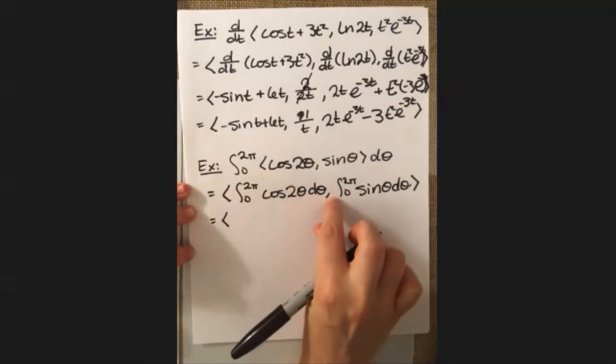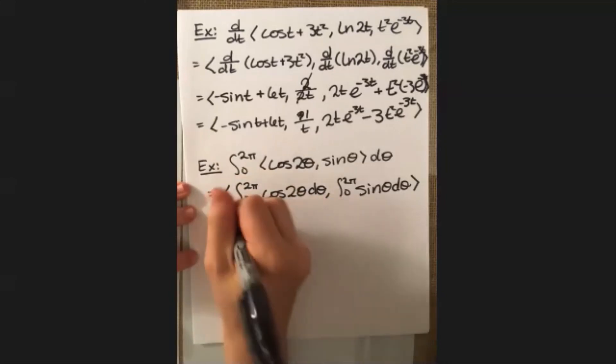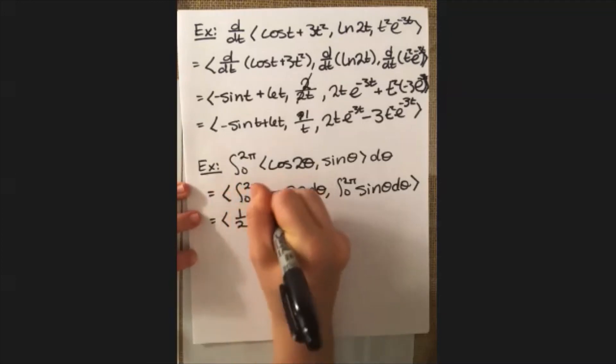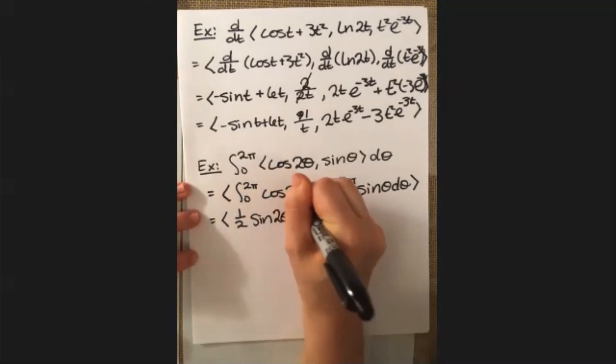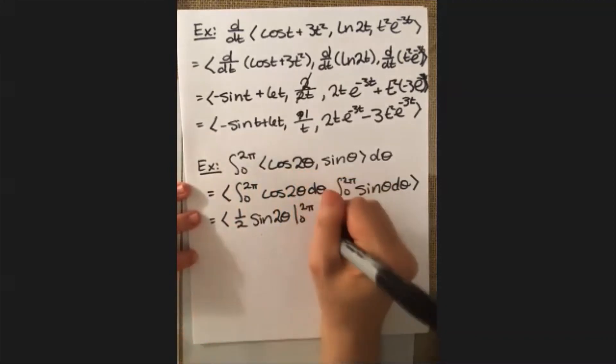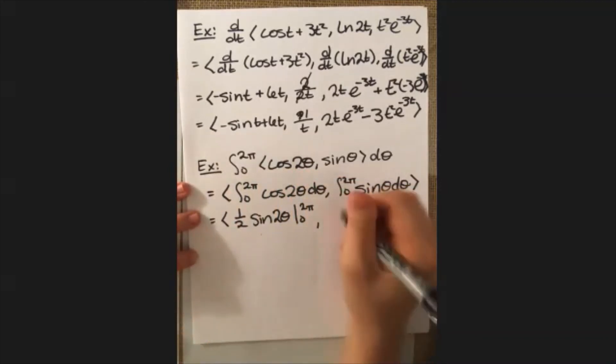So for this first one, we're going to apply some u sub. And what you wind up with out of that is 1 half sine 2 theta. And then we still have to evaluate from 0 to 2 pi. So don't forget to write that down. And then integrating sine theta gives us negative cosine theta. And once again, evaluating from 0 to 2 pi.